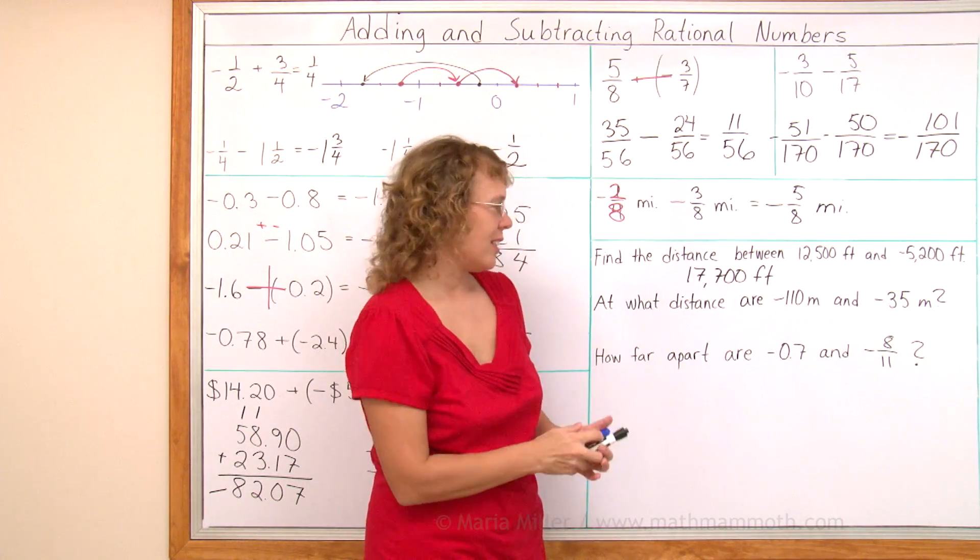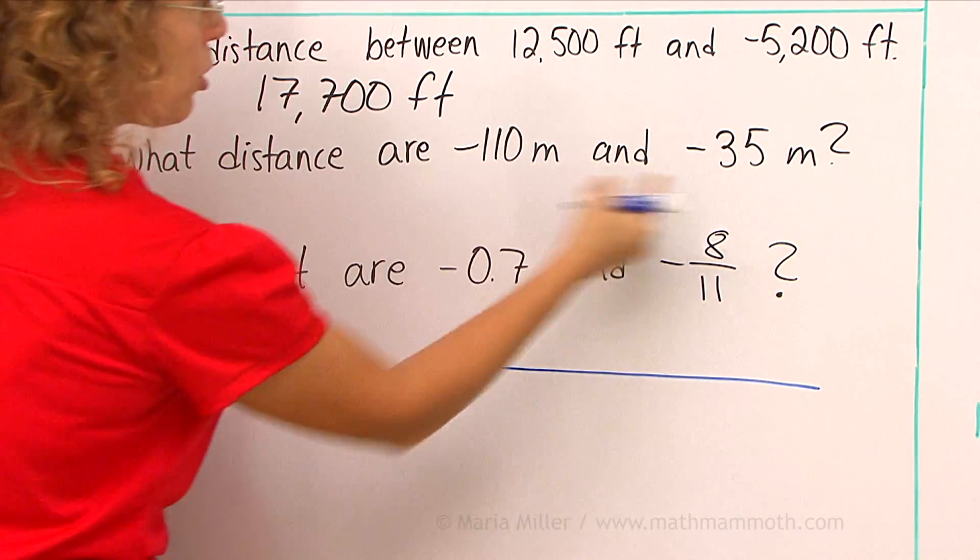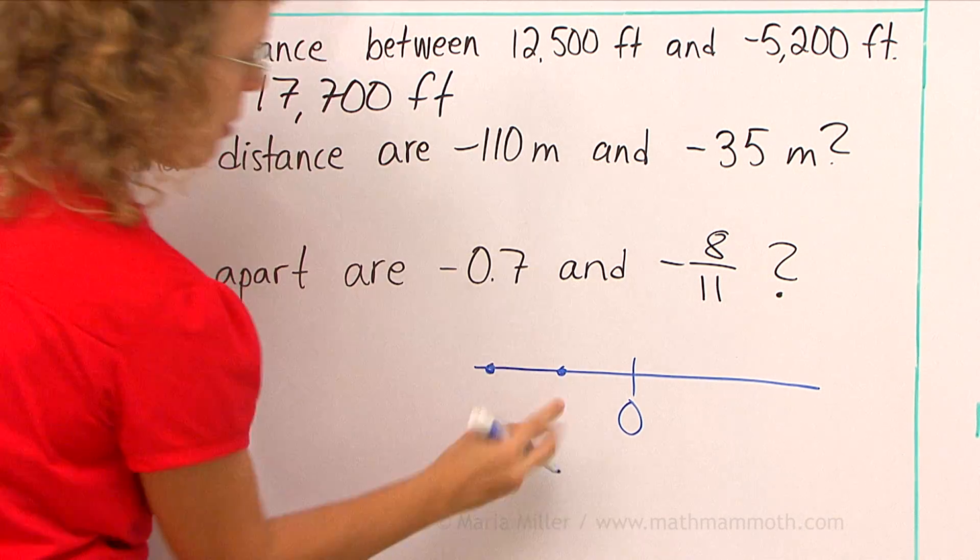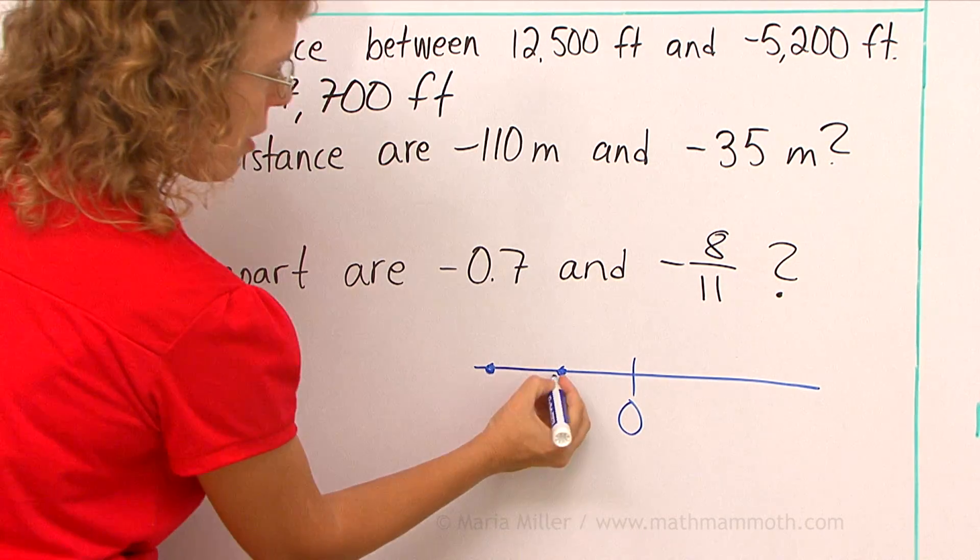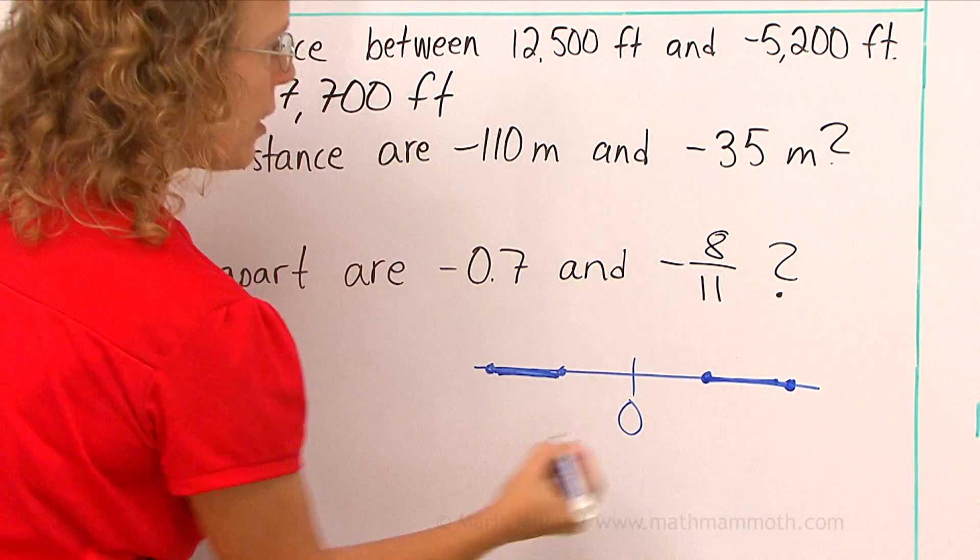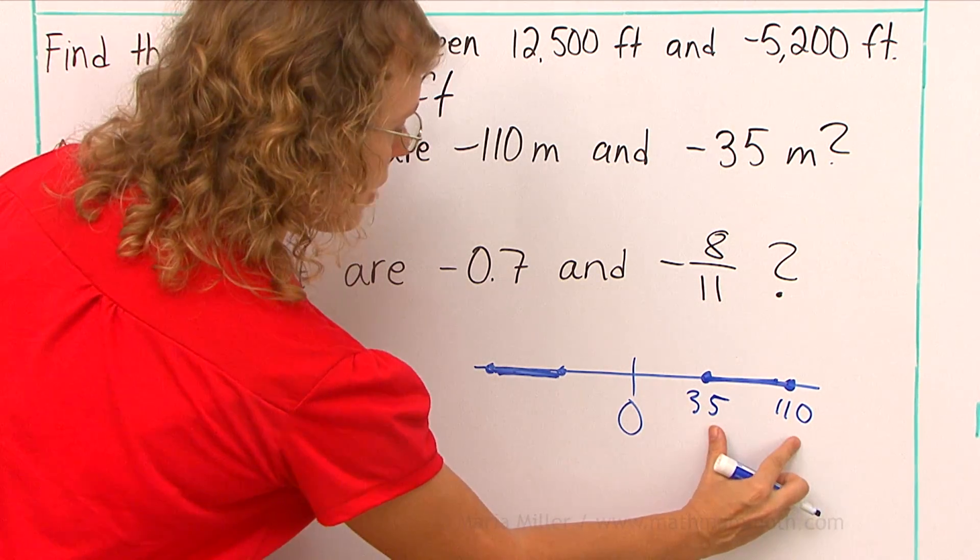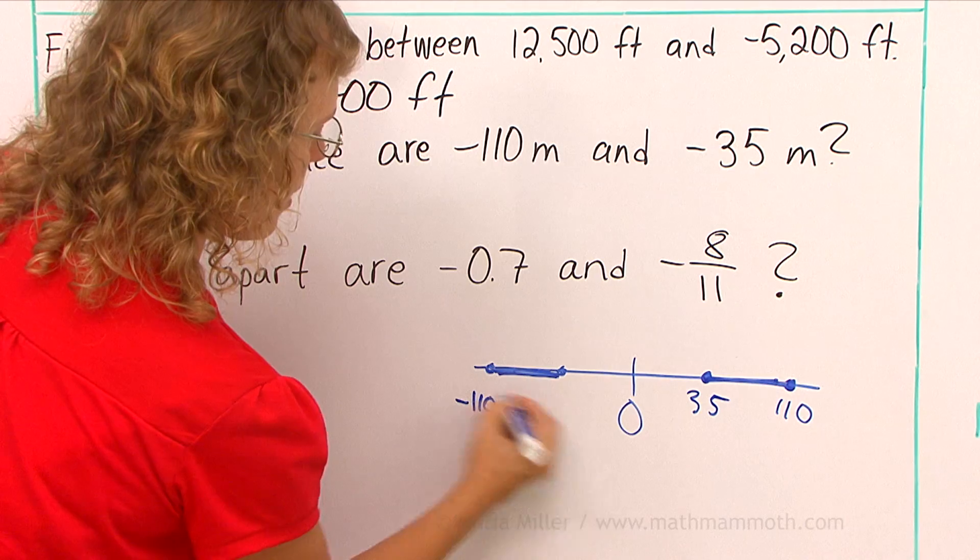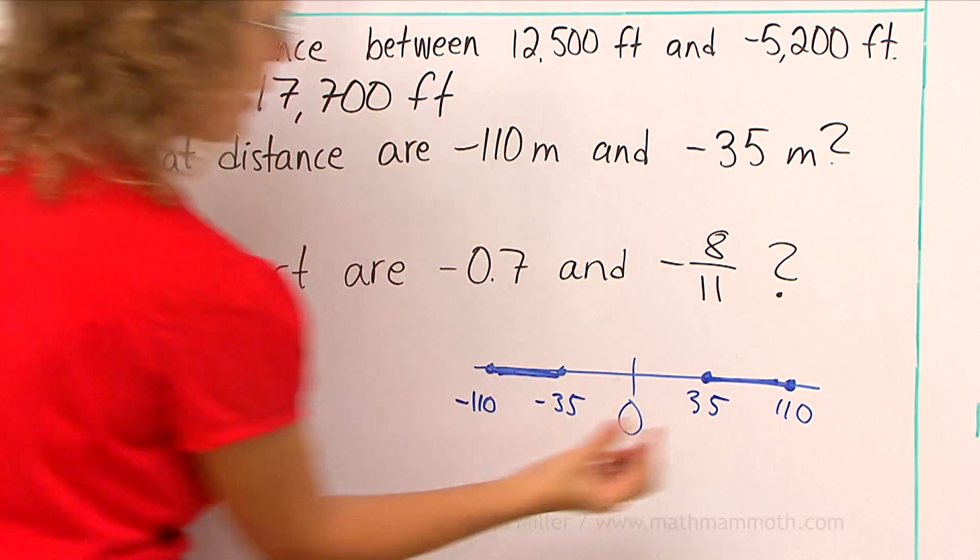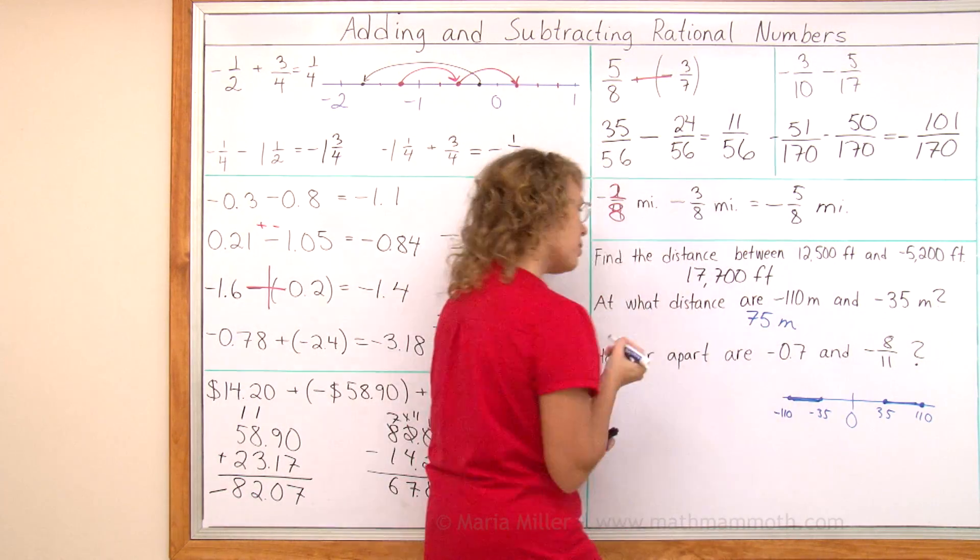The way I think about this is, if you think of a number line, those two numbers are in the negatives. Let's put zero here. And those two numbers are somewhere in the negatives. And their distance here is the same as the distance of the opposites. So I can take the positive thirty-five and one-ten and figure out the distance here. That's the same distance as the opposites, the one-ten and thirty-five. Subtracting here I get seventy-five. So the distance here is seventy-five meters.